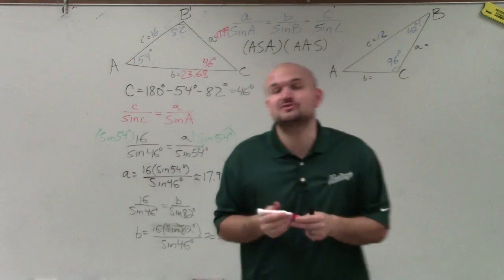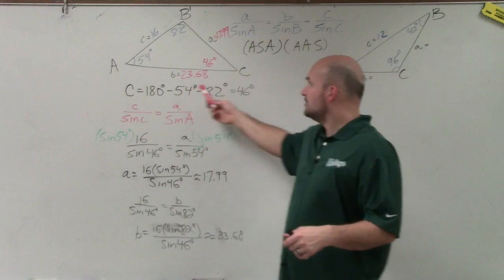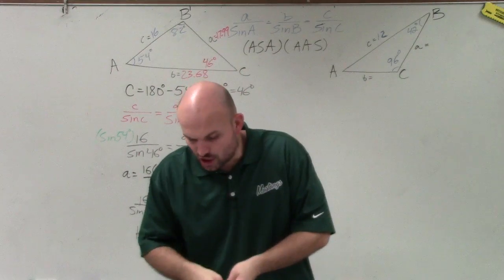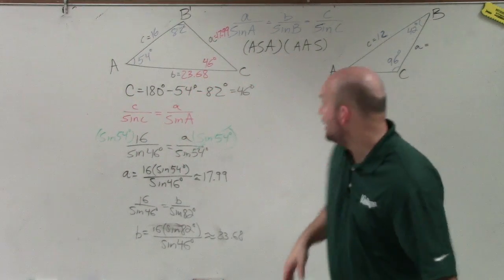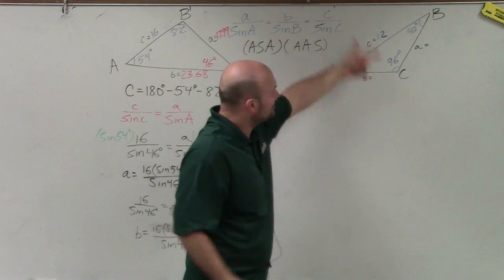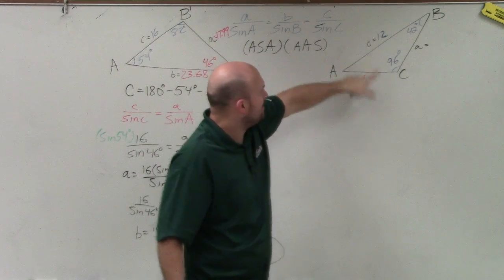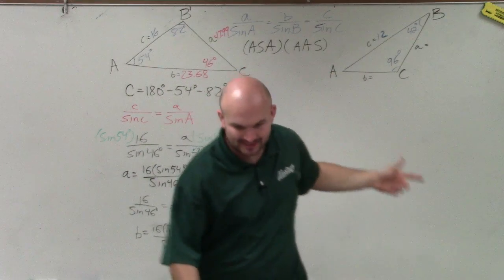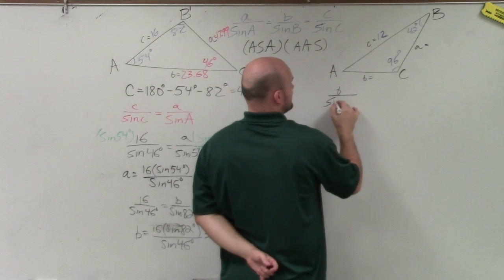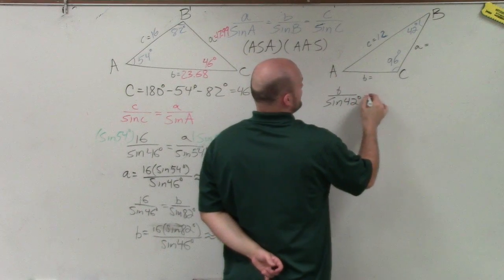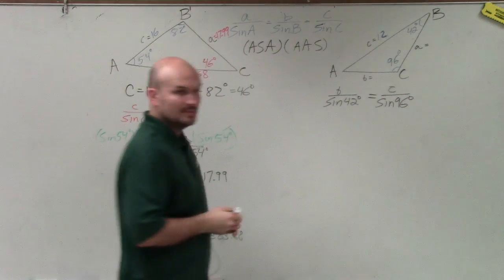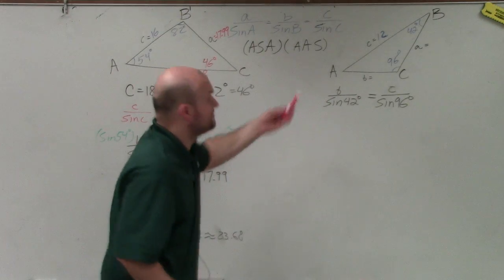So there you go — that is how you solve when you have a triangle with angle-side-angle. Make sure you use the sum of angles for a triangle to find your missing angle, then use the law of sines and proportions to solve for the sides. For the next problem, we have angle-angle-side. We already have a complete ratio, so we're set. We can set up b over sine of 42 degrees equals c over sine of 96 degrees, and we have all the information except b.